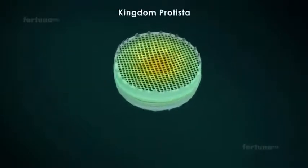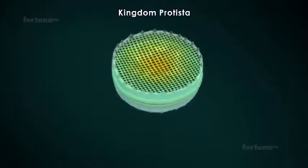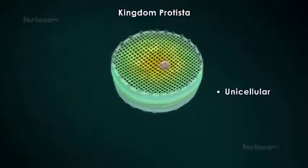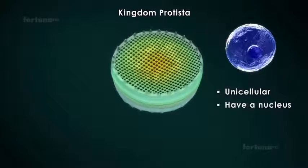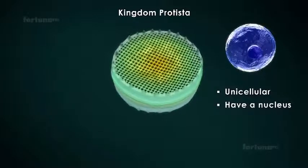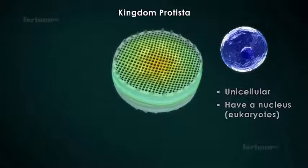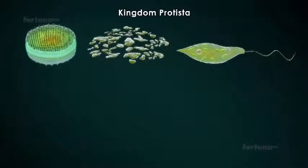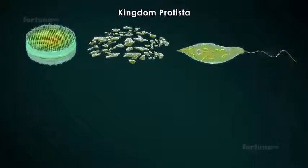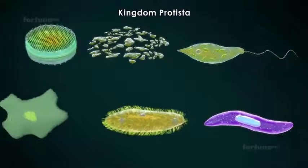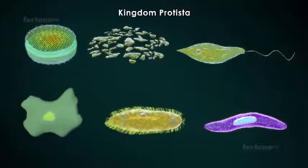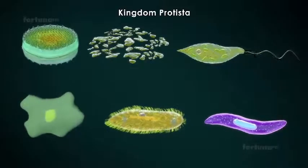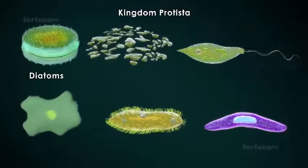Kingdom Protista is next. The organisms within this kingdom are also unicellular, but they have a nucleus. Cells of this type are referred to as Eukaryotes. Most members of this kingdom can, like plants, undergo photosynthesis and produce their own food, and like animals will have locomotory structures. Most Protista are aquatic and include diatoms, algae,